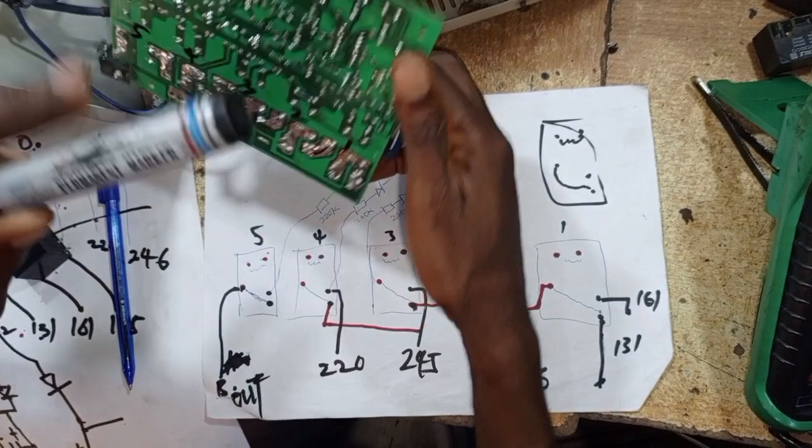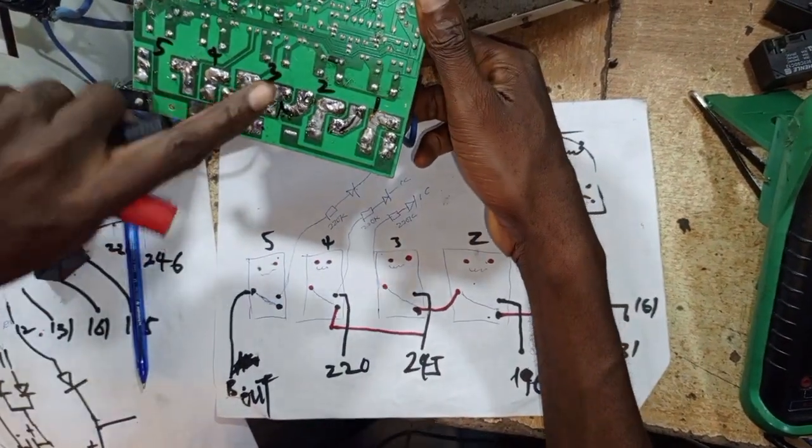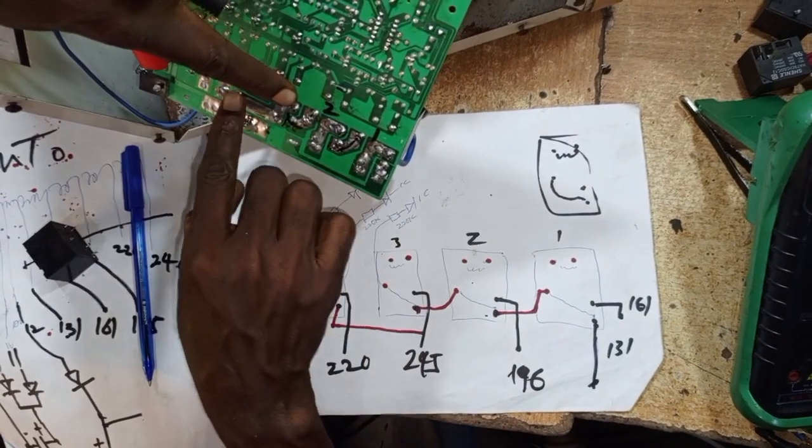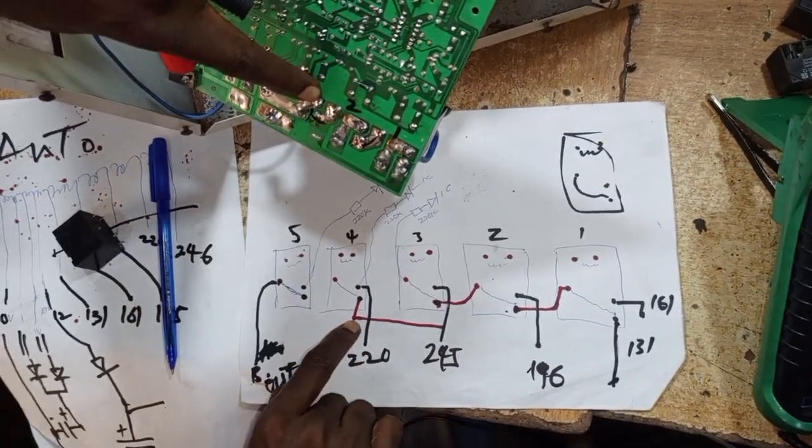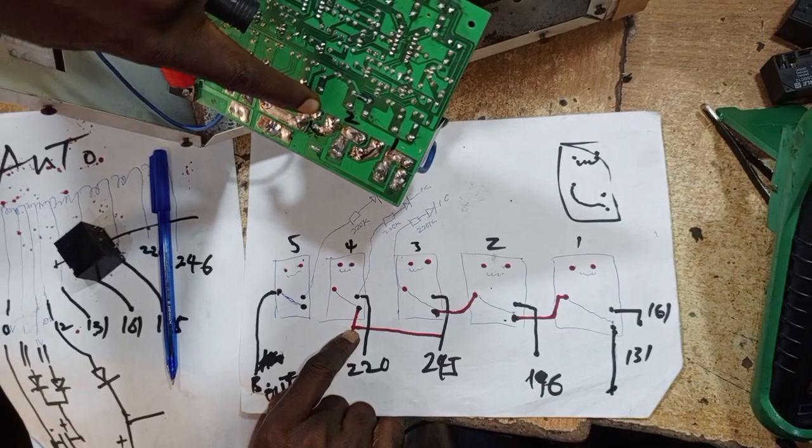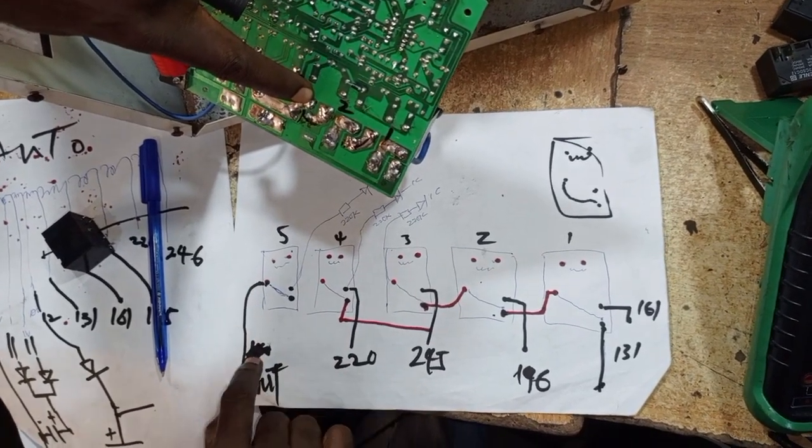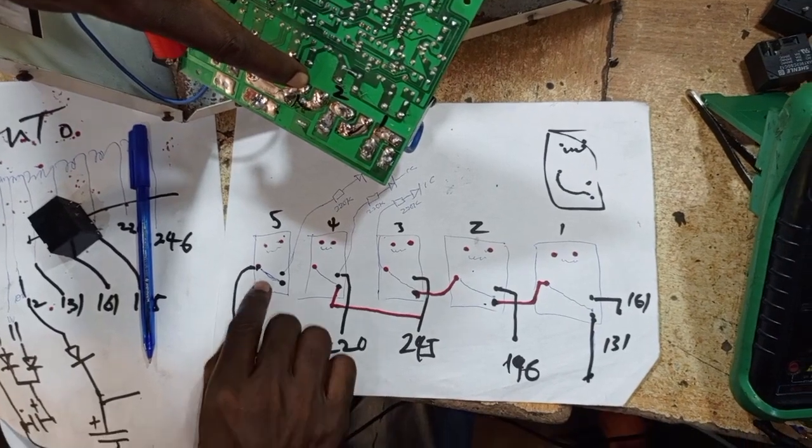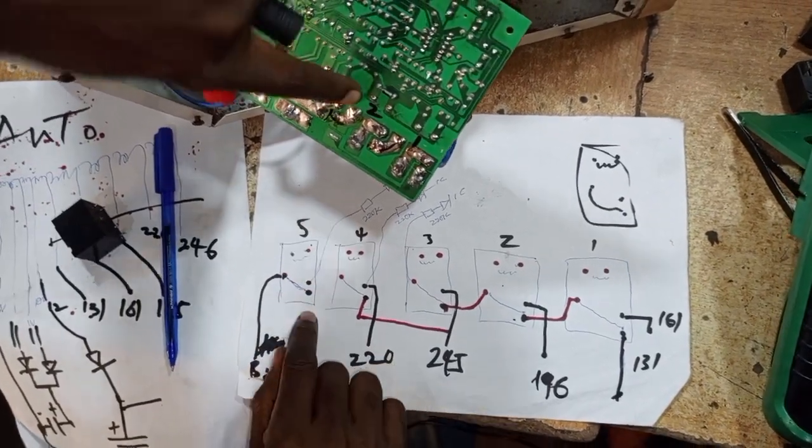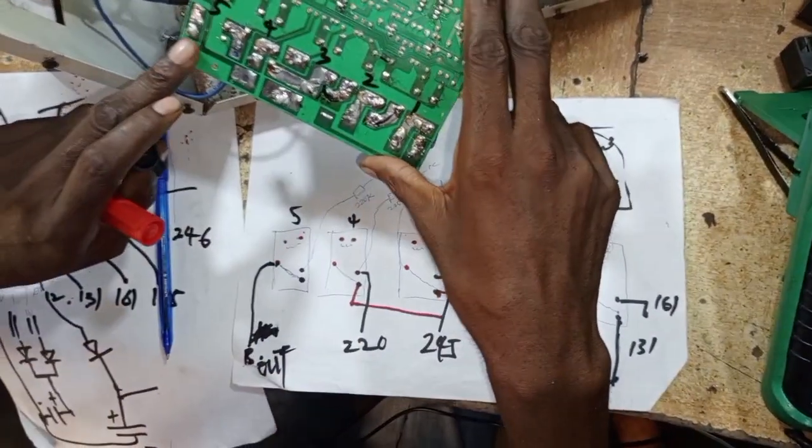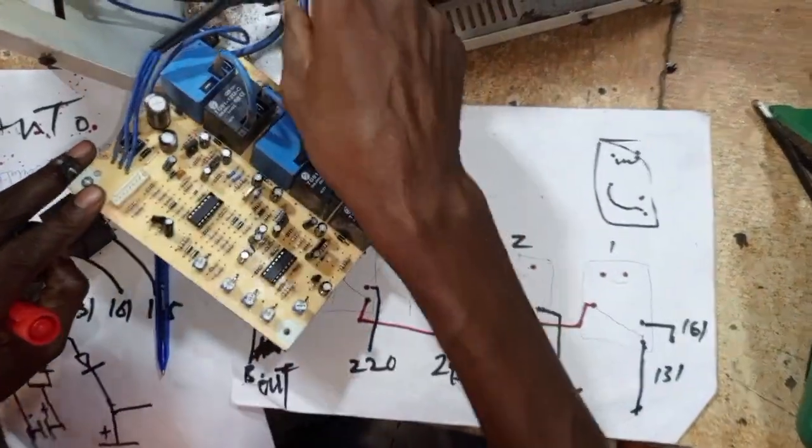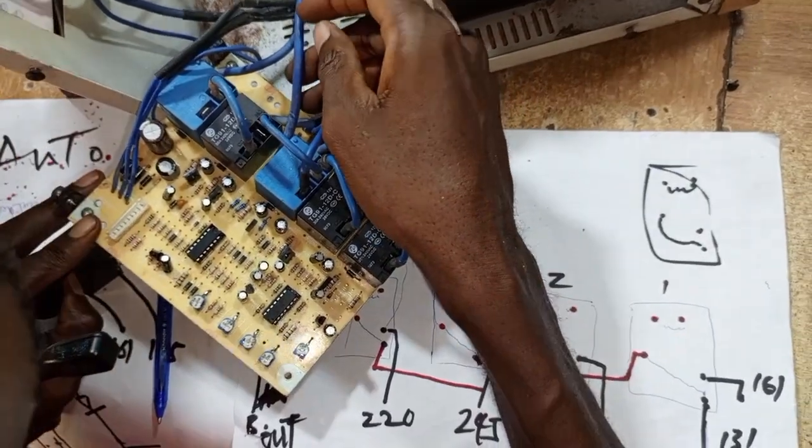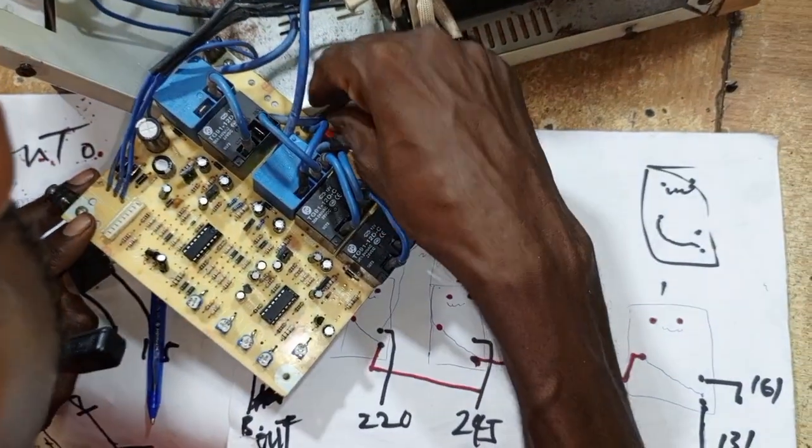Then the 245, which is this one, leads to the third one, number three, the normally open. They're still linked also, so the normally closed or the fourth one. Then this one is where they get the output from, so this is where they got the output from.